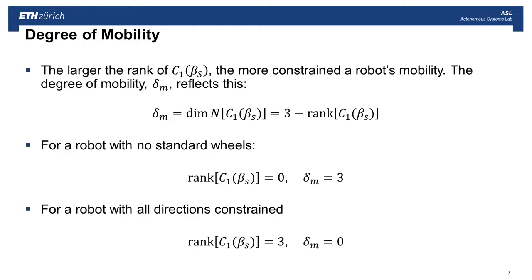So the larger the rank of C1, the more constrained a robot's mobility will be. And so we actually define this metric, the degree of mobility, that's this delta lowercase m, as the dimension of the null space of C1. And set another way, we can just do 3 minus the rank of C1. For a robot with no standard wheels, the degree of mobility is always 3. And for a robot with all directions constrained, if you've accidentally put your wheels in a way that no motion is possible, the degree of mobility is then 0.